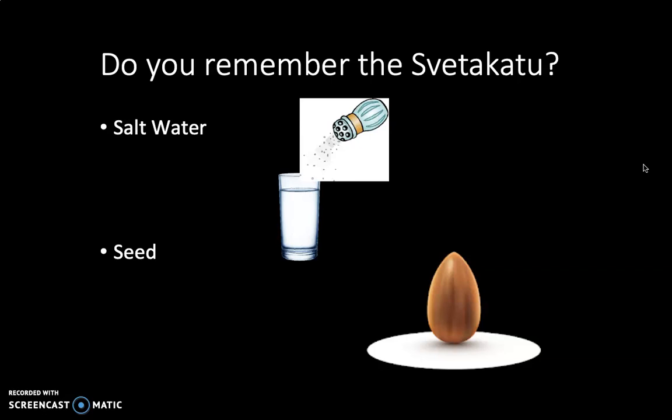Can you remember the story of Svetaketu that we learned way back at the beginning of Hindu beliefs? If you can't, this is a story about a young boy who was trying to demonstrate to his father that he had learned so much about the world and so much about God, but didn't really understand Brahman. They had the part where he had to put salt into water to make salt water, and his father asked him questions about whether he could see the salt — but he could taste it. This represents the idea that Brahman is in everything, even if you can't see him, he's still there.